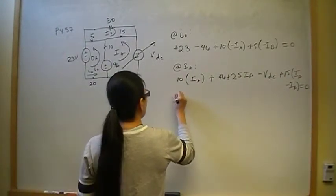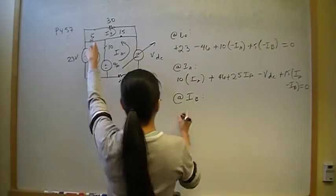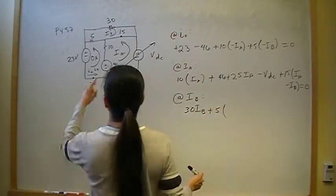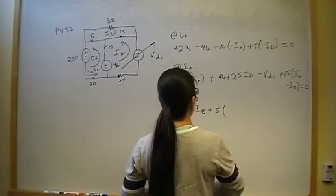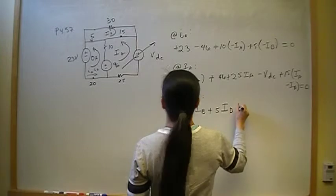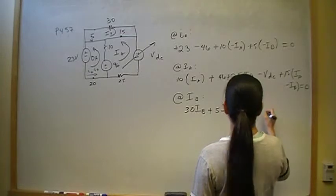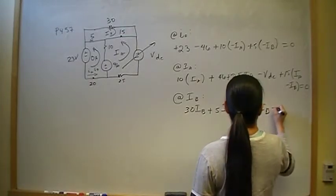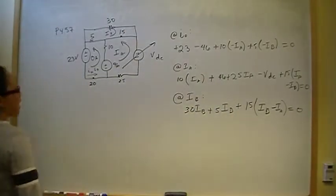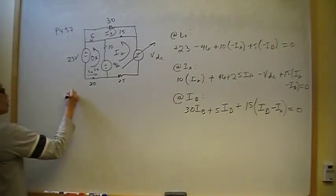The final mesh equation is at I_B: 30·I_B plus 5·(I_B minus zero), which is just 5·I_B, plus 15·(I_B minus I_A) equals zero.